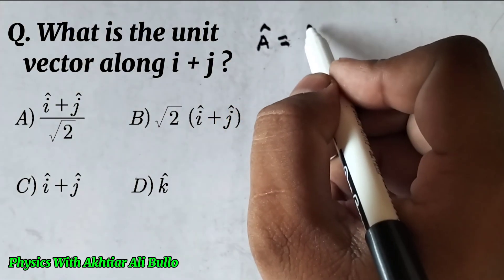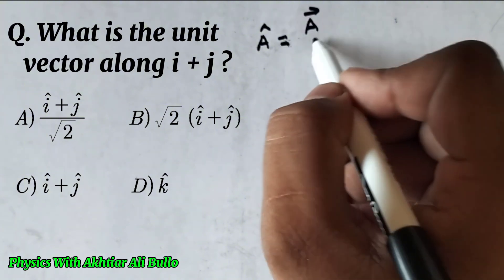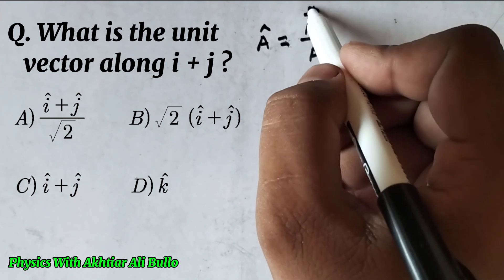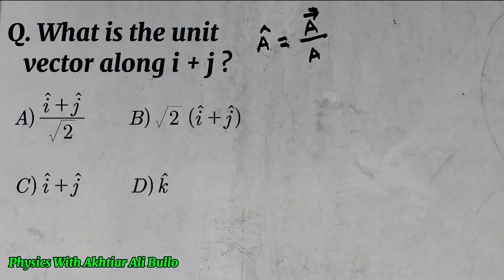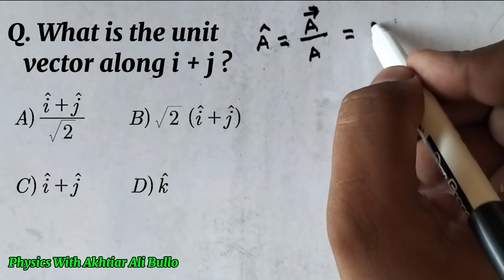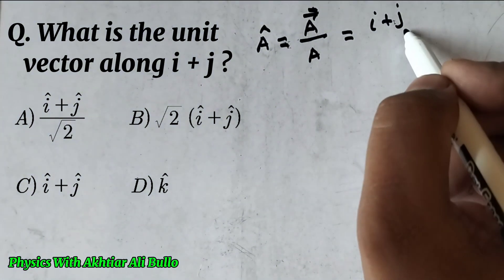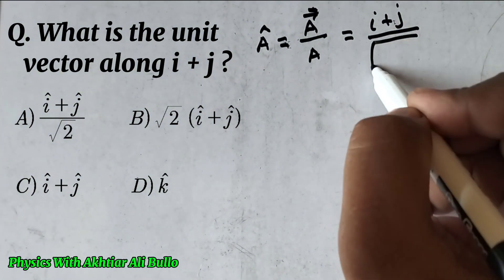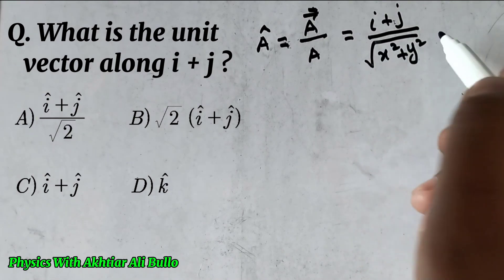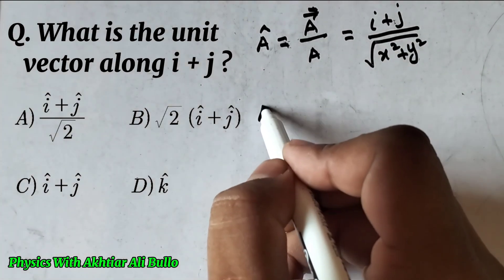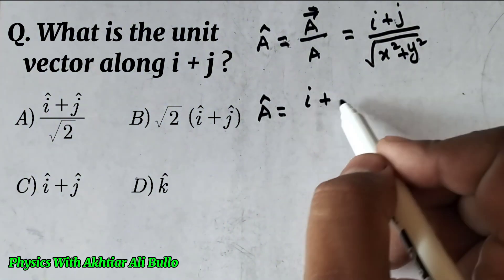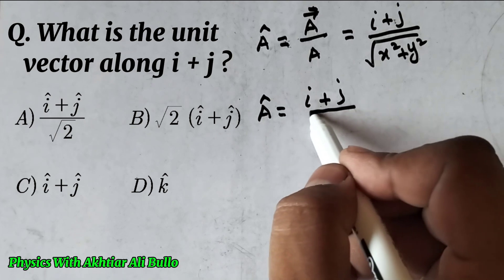The unit vector is calculated by dividing the vector by its magnitude. The vector is i plus j, divided by its magnitude, which is under root of x squared plus y squared. So the unit vector will be obtained as i plus j upon under root of x squared plus y squared.